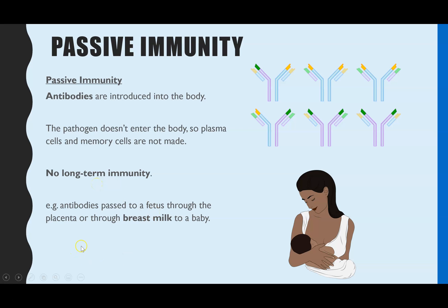Examples of passive immunity include when antibodies are passed through the placenta to a fetus from the mother, or through breast milk to a baby. Another example is snake venom, where you need a very quick response to neutralize the venom, so you inject antibodies to the toxins.